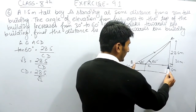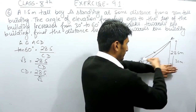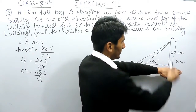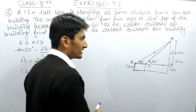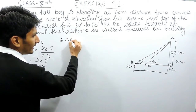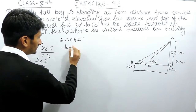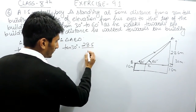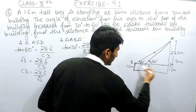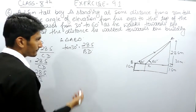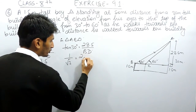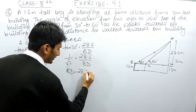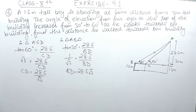Now I have to find BD using the bigger triangle ABD. The perpendicular is again 28.5 and the base is BD, with θ = 30°. In triangle ABD: tan(30°) = 28.5 / BD. Since tan(30°) = 1/√3, we get 1/√3 = 28.5 / BD, so cross-multiplying gives BD = 28.5√3.